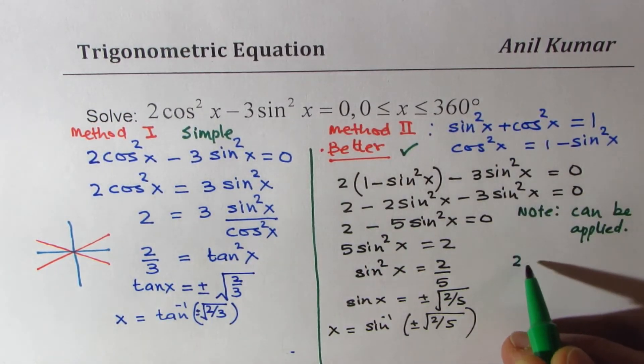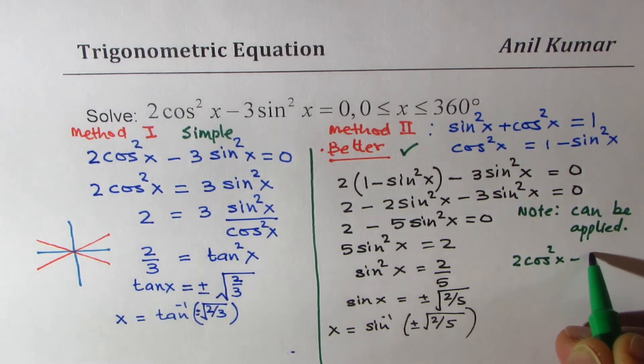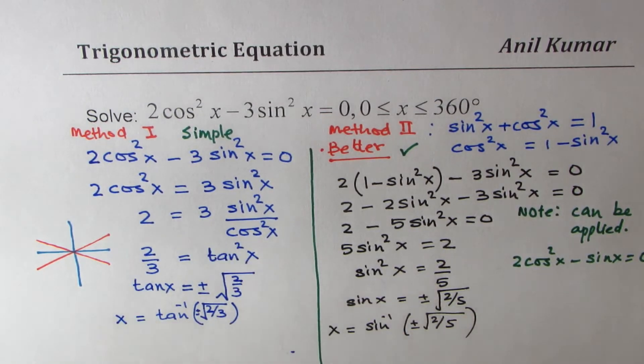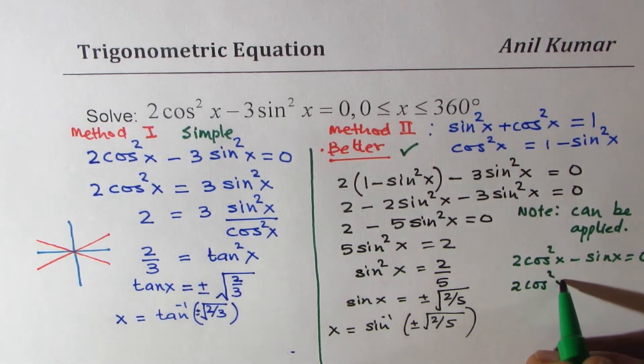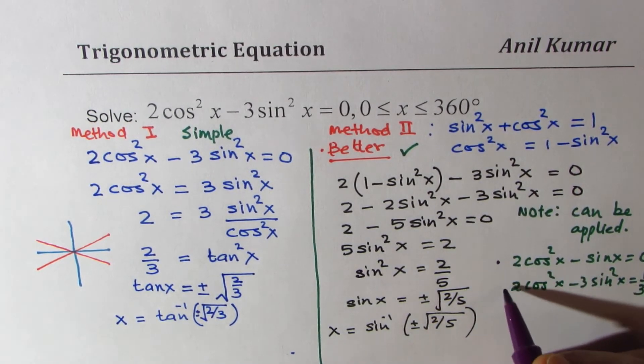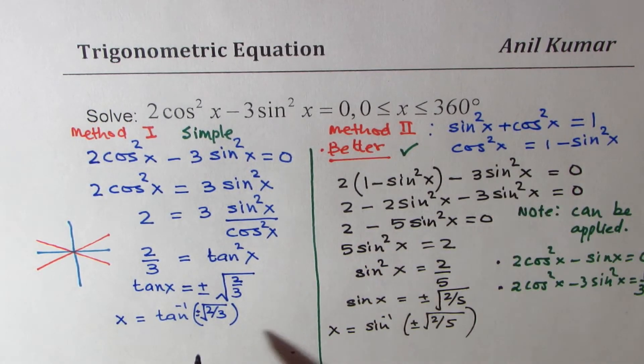Let me give you an example. If I change the question to 2cos²x - sin x = 0, now in that case I cannot use method 1. Or if I change the equation to 2cos²x - 3sin²x = 1/3, for these examples I will only use method 2. This cannot be applied. So it is versatile.